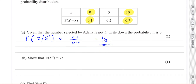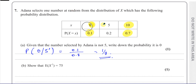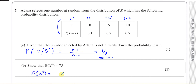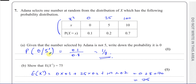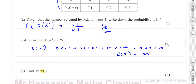Then it says show that E(X²) equals 75. What we've got to do for this part is find what X² is first — take those X values and square them. That's going to be 0, 25, and 100. Then we multiply those by the probabilities of each. So E(X²) is going to be 0 times 0.1, plus 25 times 0.2, plus 100 times 0.7. That's 0 plus 5 plus 70, which gives you 75 — exactly what we had to show. When a question says 'show', you have to have the steps shown very carefully with as many steps as possible.